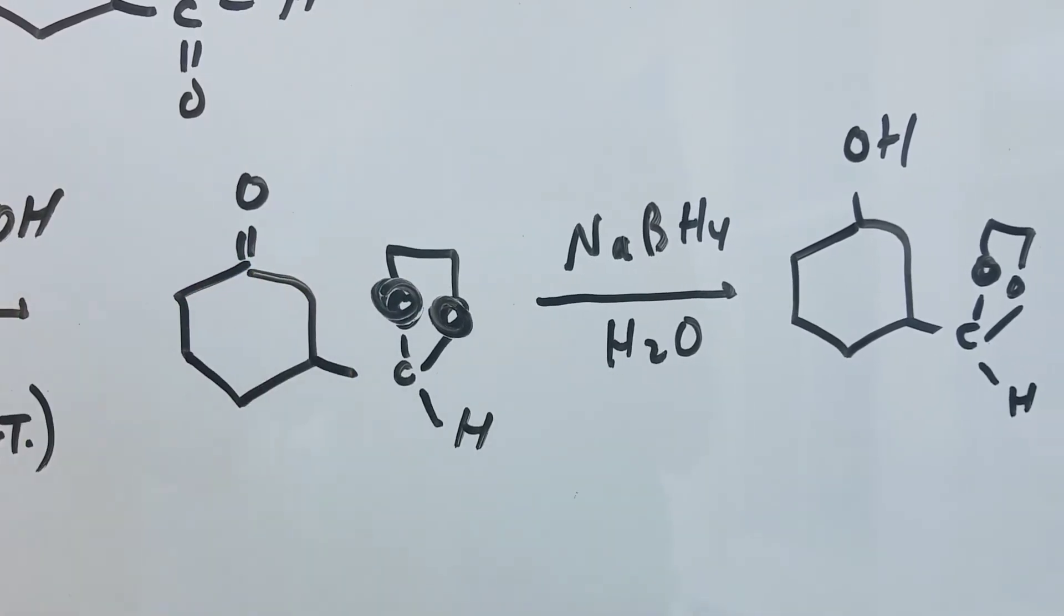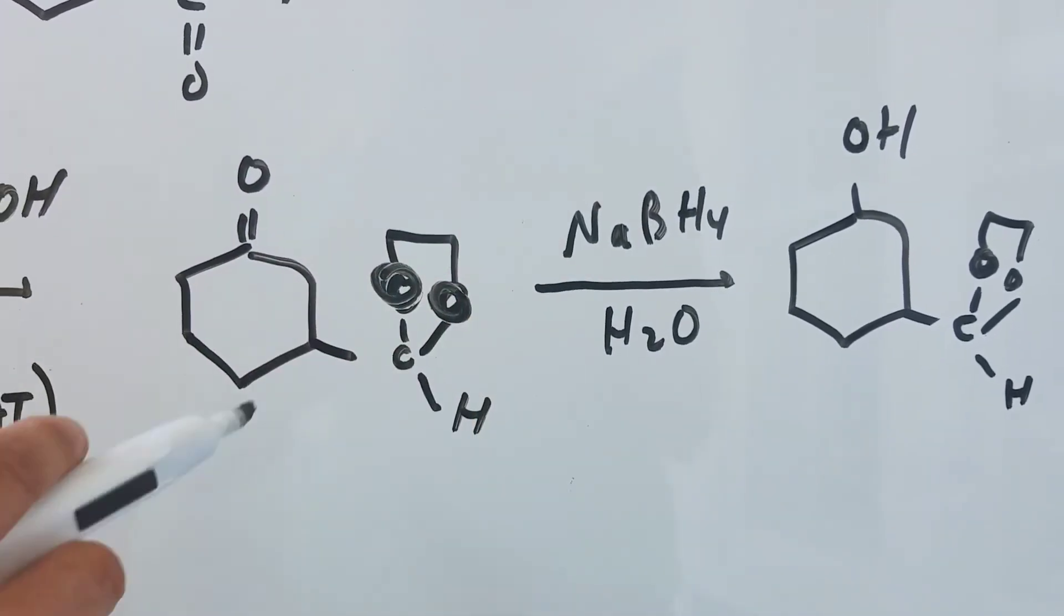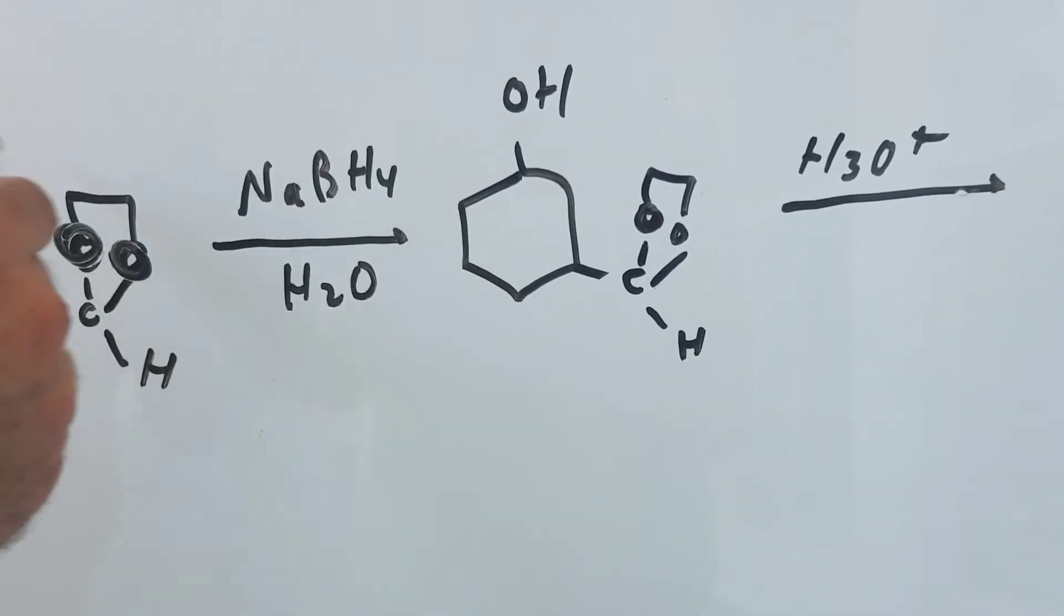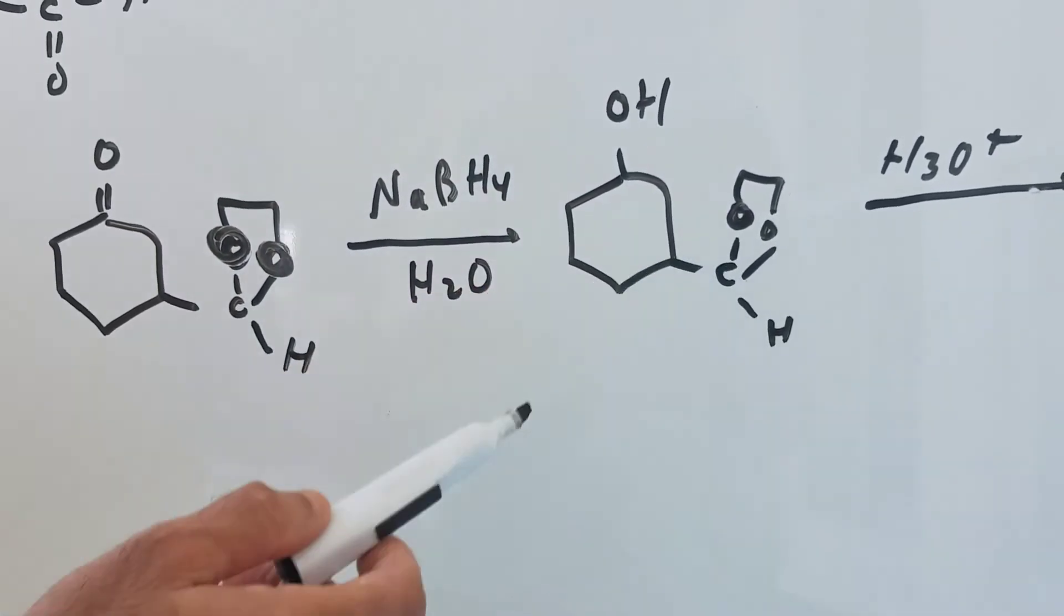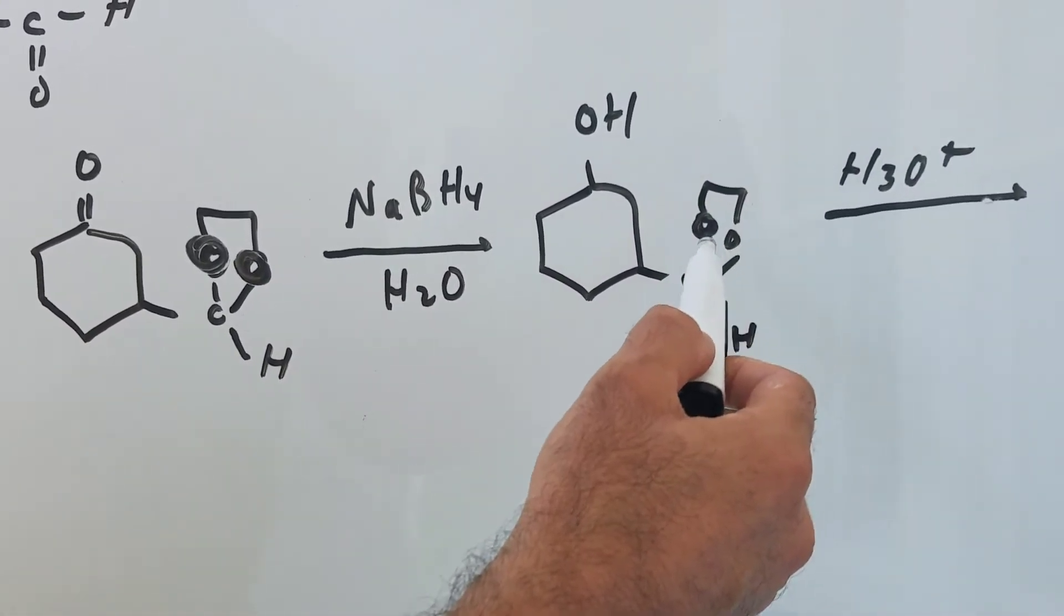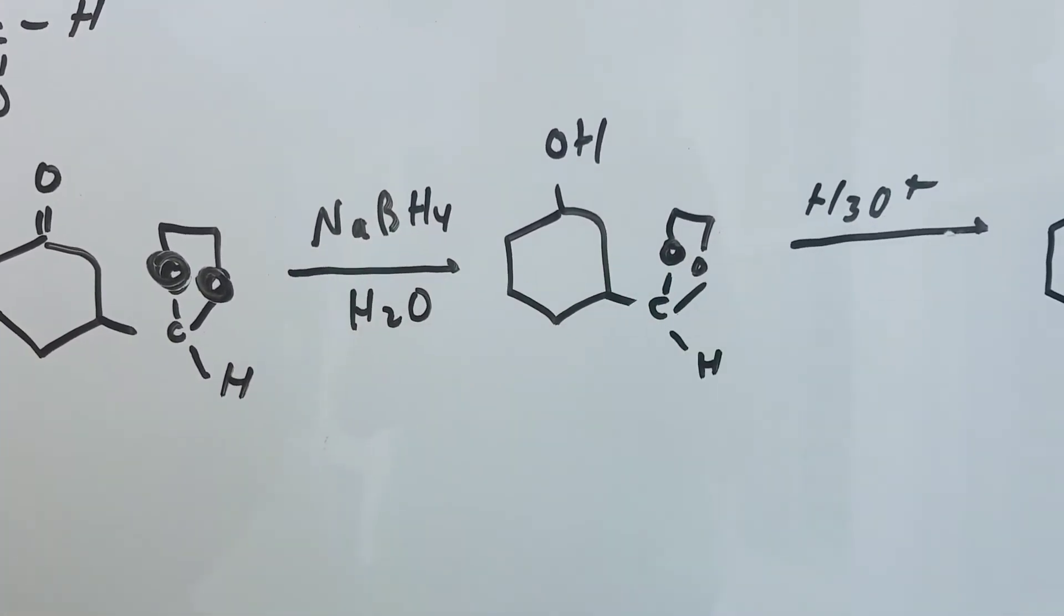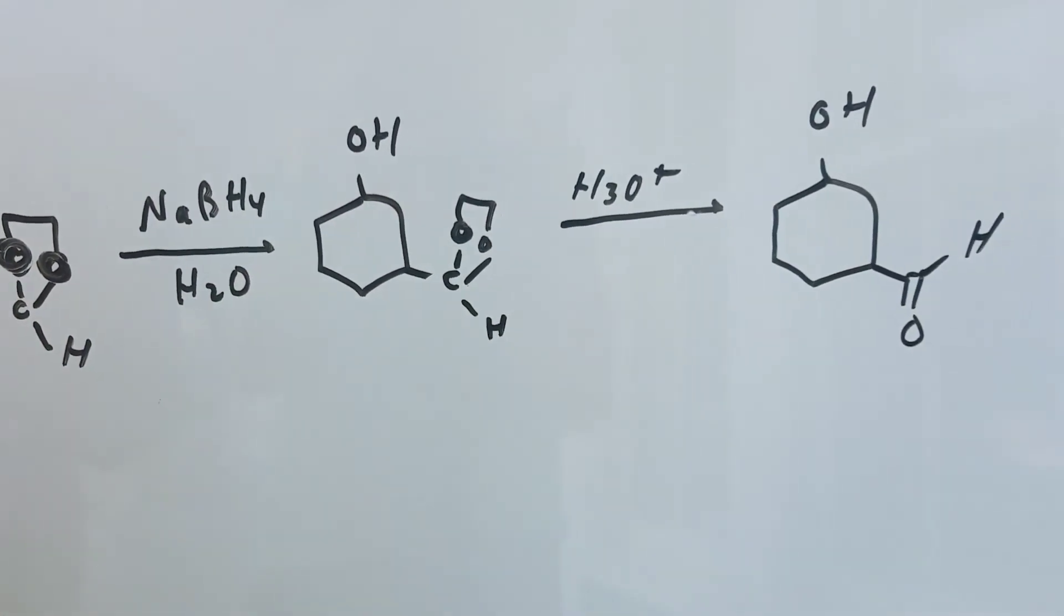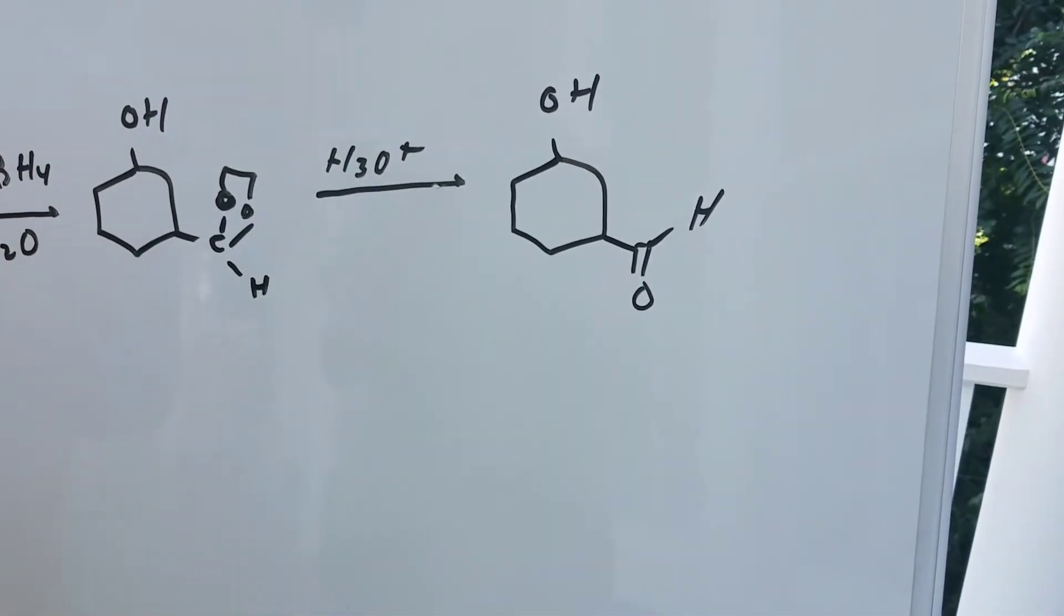Once you got the Bart Simpson head put on, i.e. the acetal protecting group, then you're on your merry way. You can reduce down the carbonyl group, do your work, and once you're done, you can remove the protecting group by hitting it with a little bit of dilute acid and that would regenerate the compound that you desire to target.